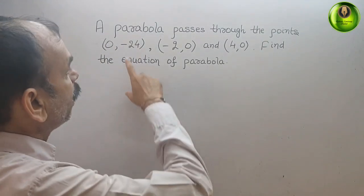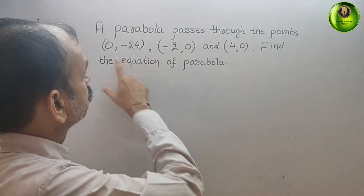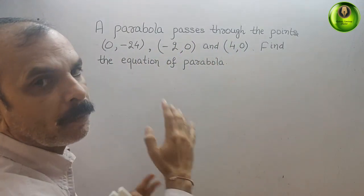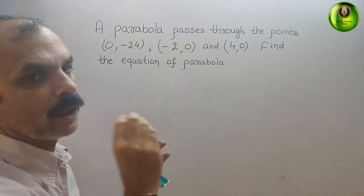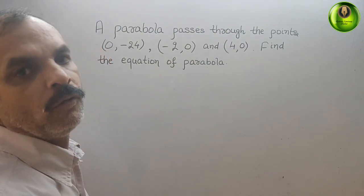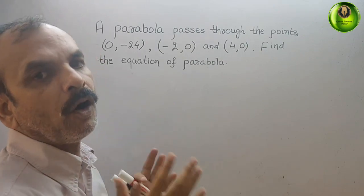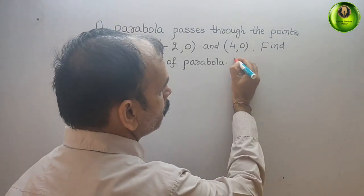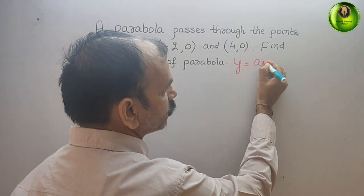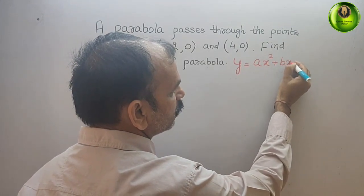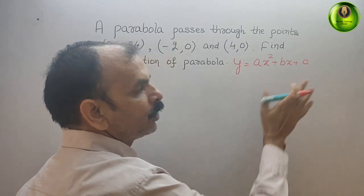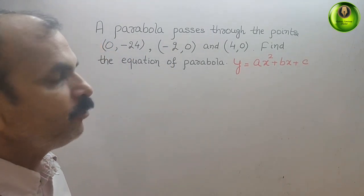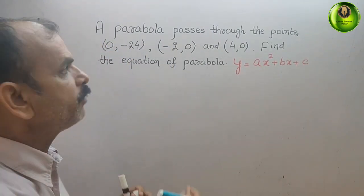The question is: a parabola passes through the points (0, -24), (-2, 0), and (4, 0). Find the equation of the parabola. First, we should know what is the standard form of a parabola equation, that is y = ax² + bx + c. This is the standard form of a parabola.